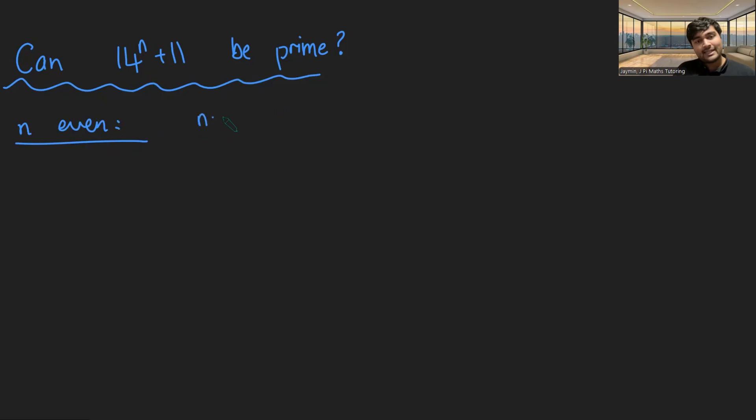If n is even, we'll deal with that case first. n can be written as 2 times m, where m is some integer, and then this expression 14 to the n plus 11 will just be 14 to the 2m plus 11. Okay, what are we going to do? Well, I'm going to show that this expression here is guaranteed to be a multiple of 3.